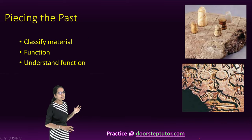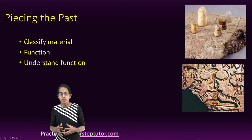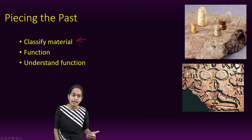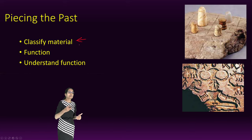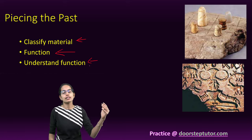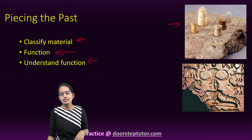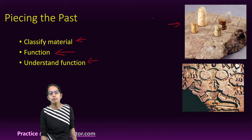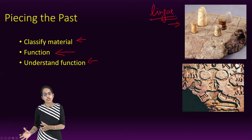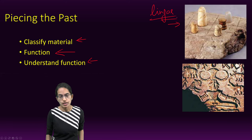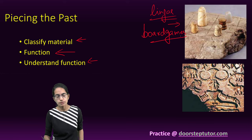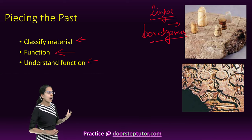How do we piece together and interpret the past? First, we classify the material — by doing so we understand to which era it belonged, such as whether it was after the Chalcolithic period, indicating copper was in use. Then we identify and understand the function of the objects. Here is a classic example: some scholars identified certain objects as Lingas — Shiva statues that are worshipped — while other archaeologists said these were board games.